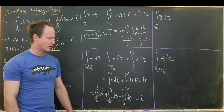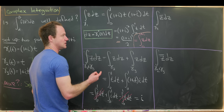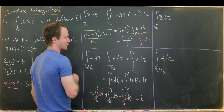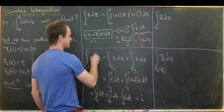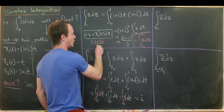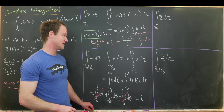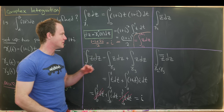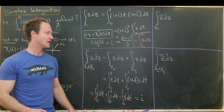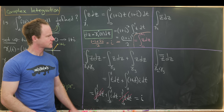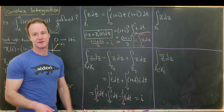You might worry because i doesn't look like (1+i)²/2, but expanding (1+i)²/2: we get (1 + 2i - 1)/2 = 2i/2 = i. So we got the same answer either way. This gives motivation that writing the integral in a path-independent form is allowed, at least for this function. We'll finish this video by proving that the function z is indeed path independent with respect to complex integration.